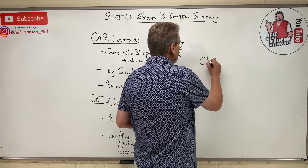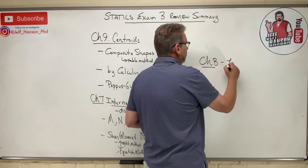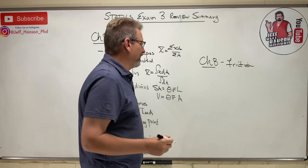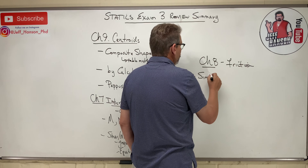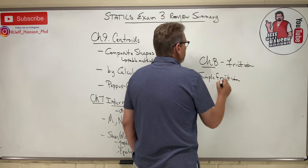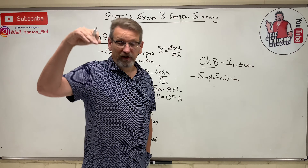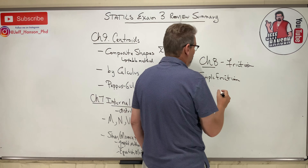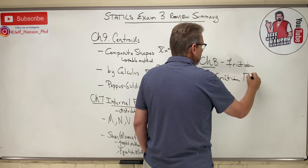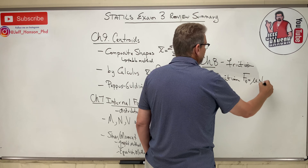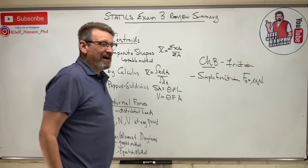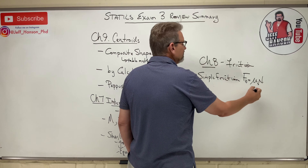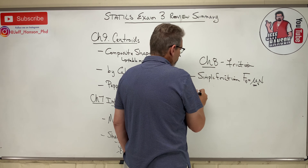And then finally we just finished Chapter 8, which has friction. What kind of friction problems do we need to study? Number one: simple friction — like a box on an inclined plane or a ladder leaning up against a wall. Friction is fun! You can have mu sub k in friction problems but only if the object is moving at constant velocity. Most of the time you'll use mu sub s.